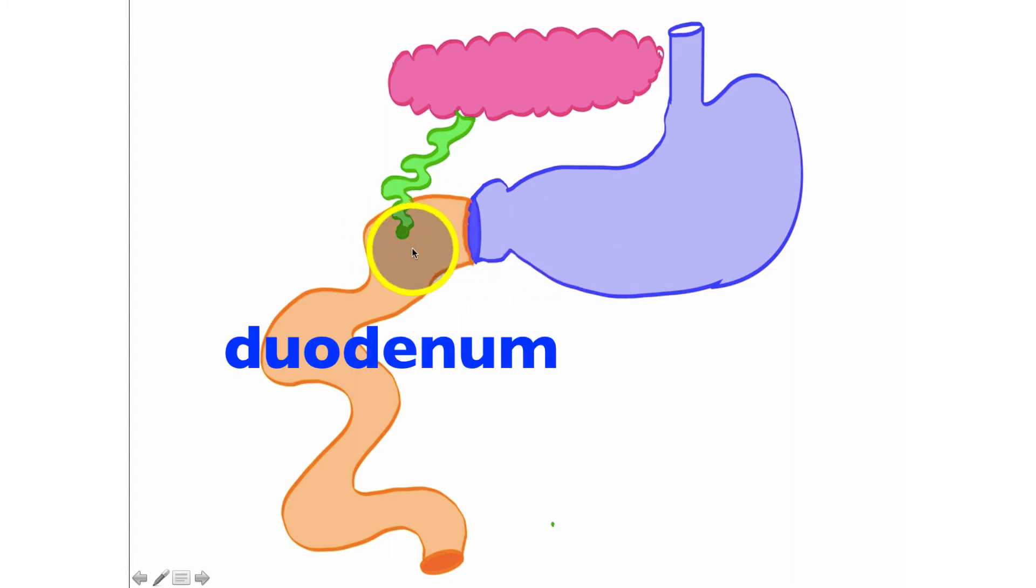Immediately leaving the stomach is going to be the small intestine. The first section of it I have drawn in orange here, and this is the duodenum.